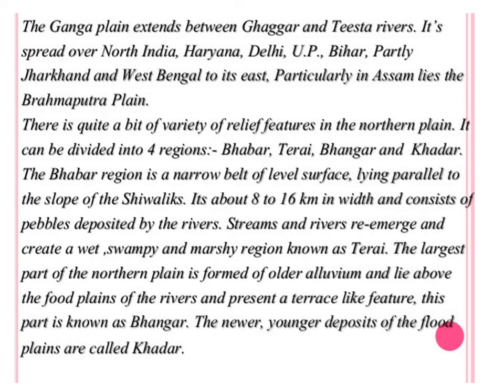The third and fourth relief divisions are the two types of alluvial soil: Bhangar and Khadar. Bhangar is also known as old alluvial soil, while Khadar is known as new or young deposition by the river. Bhangar is less fertile, and Khadar is more fertile.